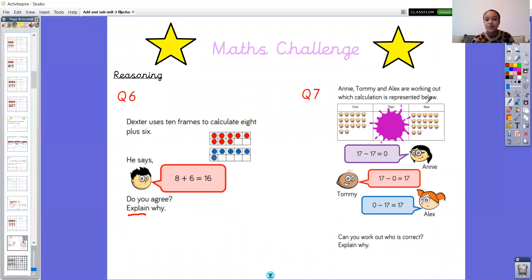And question seven. Annie, Tommy and Alex are working out which calculation is represented below. Can you work out who is correct? And again explain why. So you might need to get an adult to help you with that and that's absolutely fine if that's what you want to do. Okay so this is your maths challenge if you feel like you're up for it. So if you're going to do that you need to pause the video and I will see you all very soon. Bye everybody.